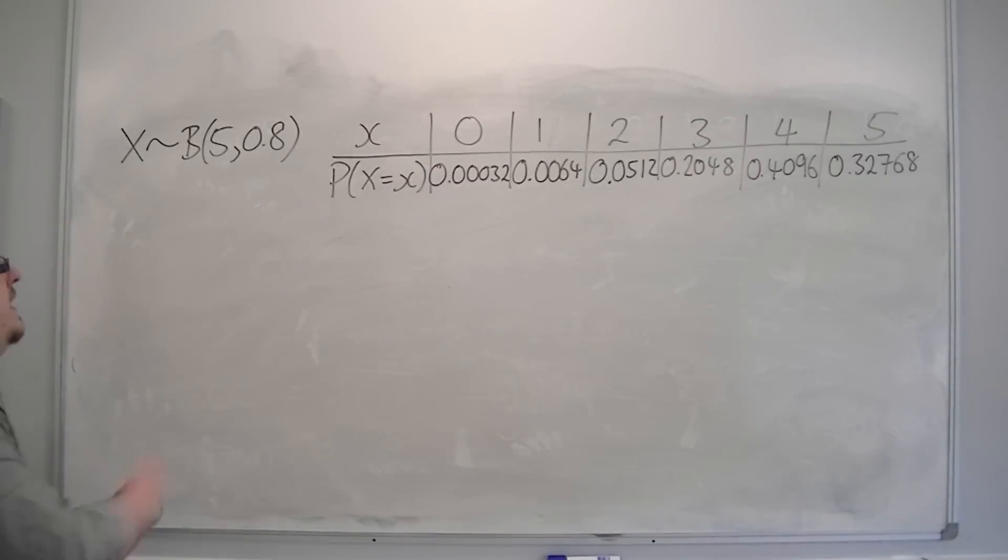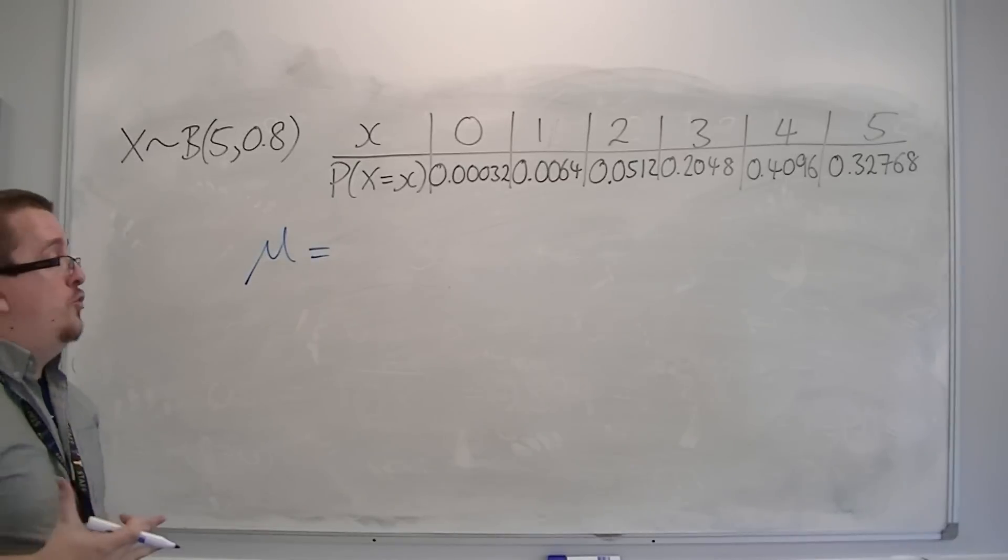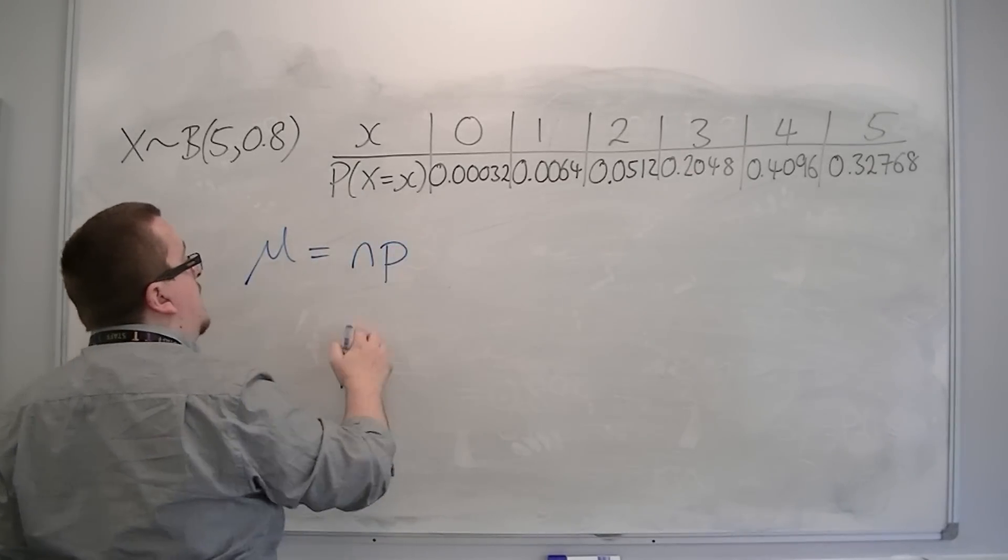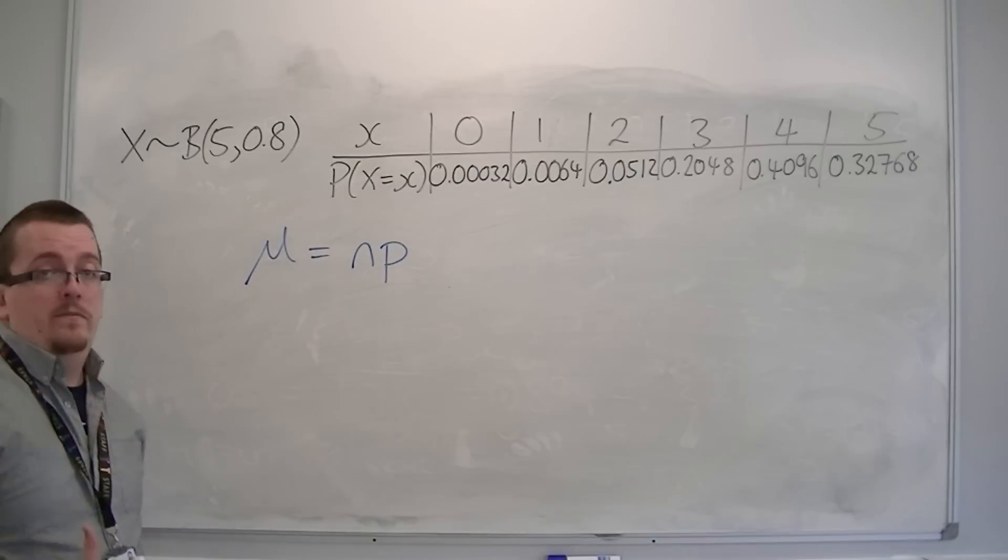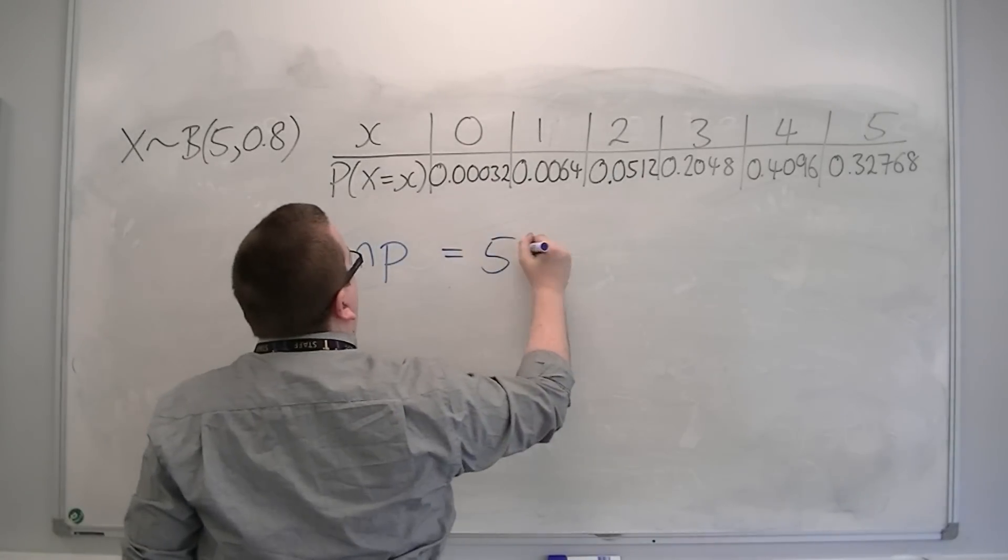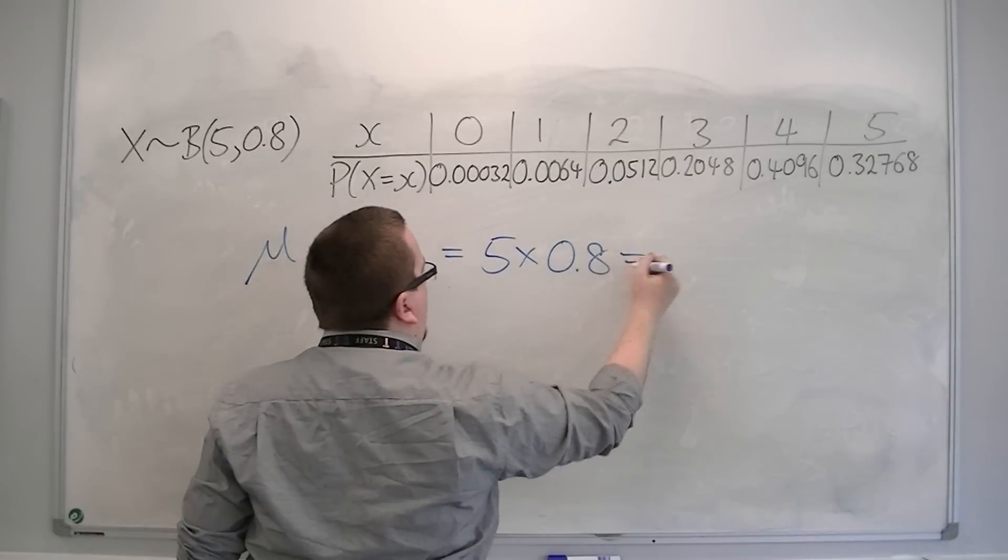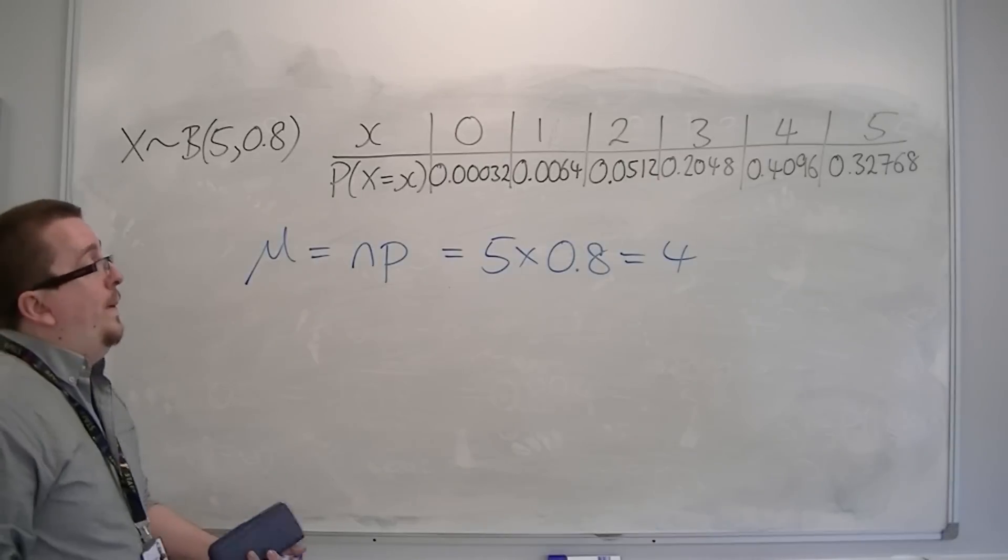You can calculate the mean of a binomial distribution using the formula Np, N times p. This formula is given to you in the formula booklet on page 11. N in this case is 5 and the probability is 0.8. So 5 lots of 0.8 is actually 4, as we expected.